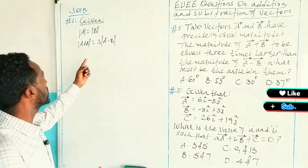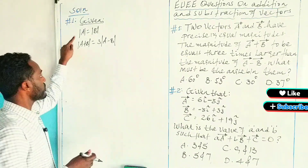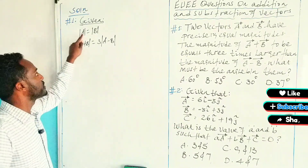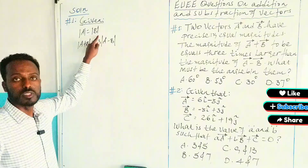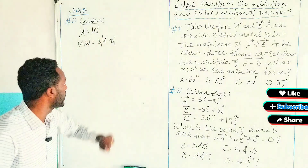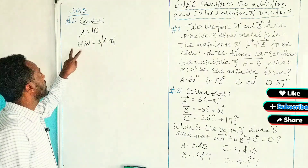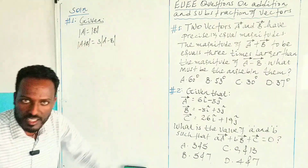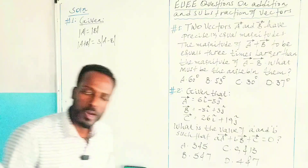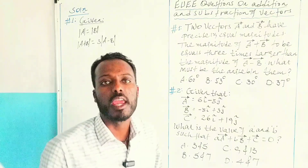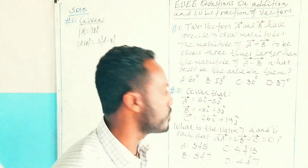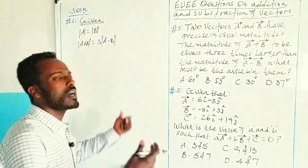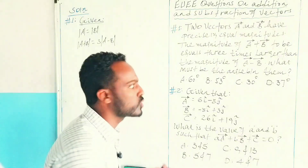So we have two givens: magnitude of vector A is precisely equal to magnitude of vector B, and the magnitude of A plus B is 3 times larger than the magnitude of A minus B. So what must be the angle between them?